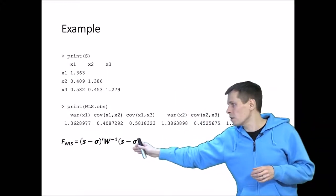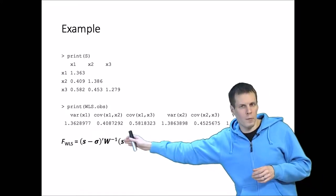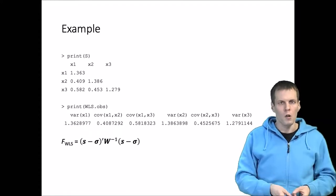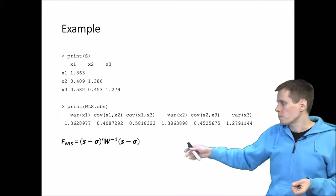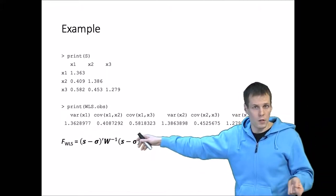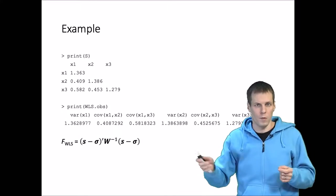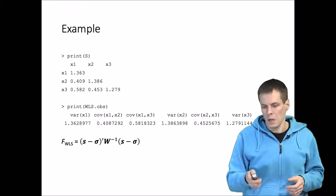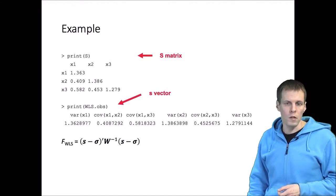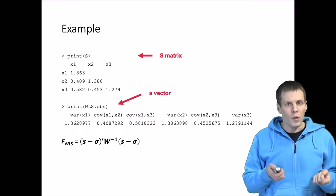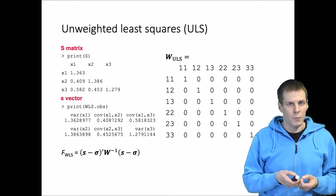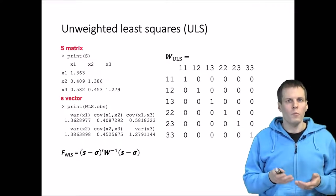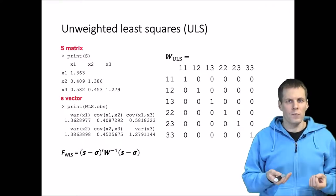We have a vector of differences and we multiply on both sides with the weight matrix. This produces weighted least squares because each difference is taken twice — you multiply from the left side then from the right side with the weight matrix, producing a single weighted sum of squares. If we apply a W that is diagonal, that produces the unweighted least squares estimator.